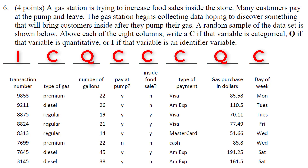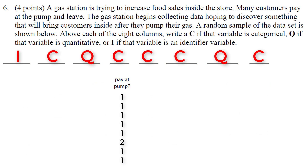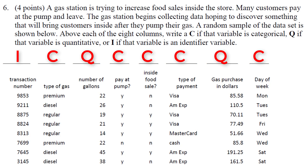A tricky thing that can be done here is something like pay at the pump could be entered as one and two — one for people who paid at the pump and two for those who did not. So all the Y's would be one and all the N's would be two. Don't be tricked — this is not quantitative. If we talked about the difference between one and two it would not mean one is any less than two; they're just group labels. Don't assume a number is quantitative — ask: does the difference between these numbers actually make sense? For number of gallons and gas purchase in dollars it does make sense.